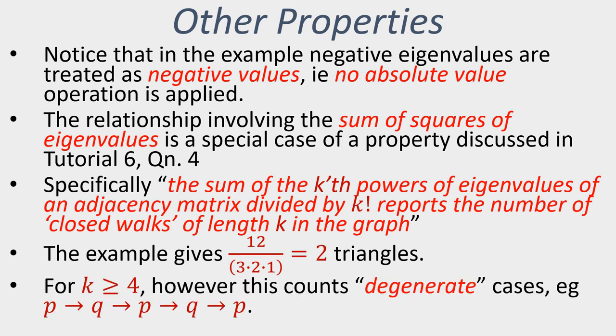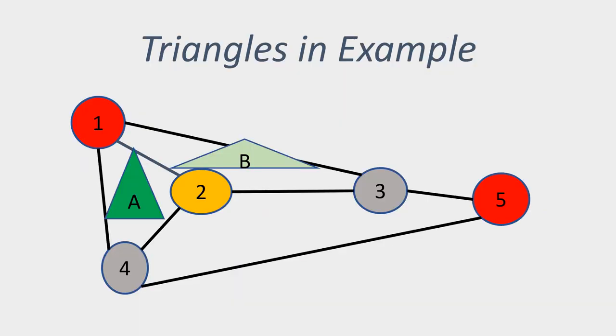Now there are problems with applying that to cases where we are looking at closed walks of length at least 4, and the problem is that our counting method includes degenerate cases—such as we travel from a node to another node, we travel back to our starting point, and then we repeat that process. If I look at our example graph, then here we have our exactly two triangles: this one marked A, travelling from 1 to 2 to 4 and back to 1, and this other triangle which I've indicated is B, travelling from 1 to 2 to 3 and back to 1. And in that particular graph, there are no other triangles present.